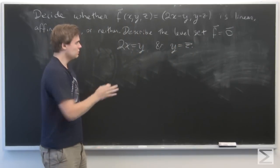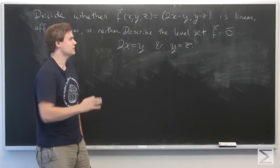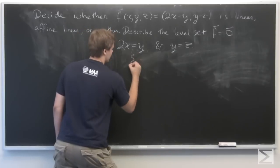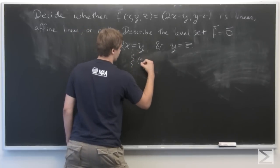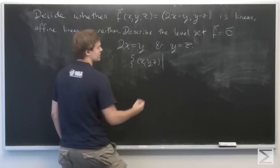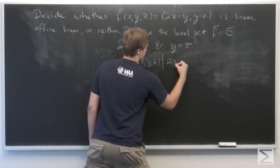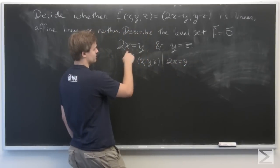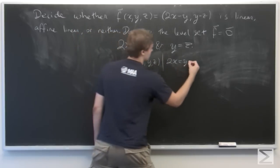Okay, so we've described it, but we can do a little bit better. We can actually give an explicit description of this set. So, it's a set of points x, y, z in R^3, such that 2x equals y, and since 2x equals y and y equals z, we have that's also equal to z.